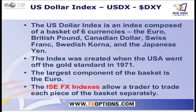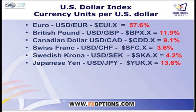The dollar index is a basket of six currencies: the euro, the British pound, the Canadian dollar, the Swiss franc, the Swedish krona, and the Japanese yen. The index was created in 1971 when the USA went off the gold standard. The largest component is the euro. The ISE FX indexes allow you to trade each piece of this basket separately. The percentages are: euro at 57.6%, British pound at 11.9%, Canadian dollar at 9.1%, Swiss franc at 3.6%, Swedish krona at 4.2%, and Japanese yen at 13.6% of the basket.